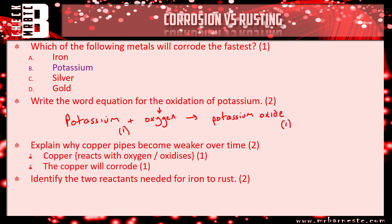And then finally, identify the two reactants needed for iron to rust. Number one, oxygen. And number two, water.